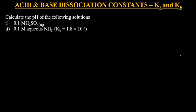Let's take a look at this example. Calculate the pH of the following solutions: 0.1 molar H2SO4, and 0.1 molar NH3.